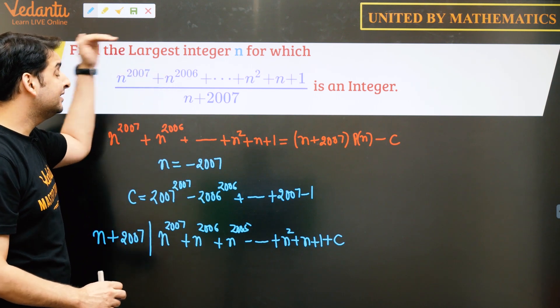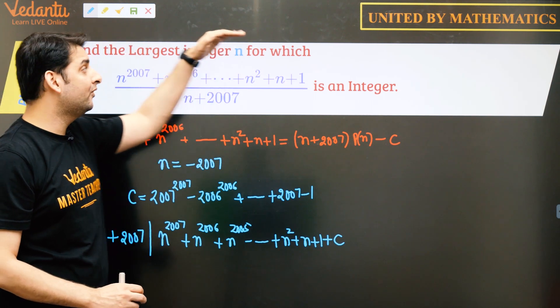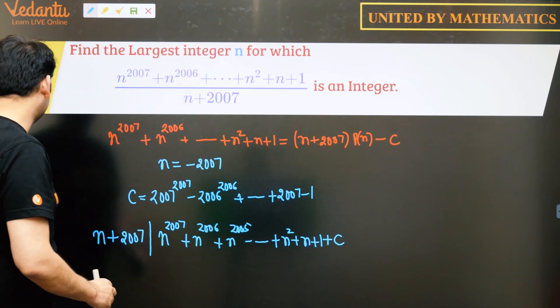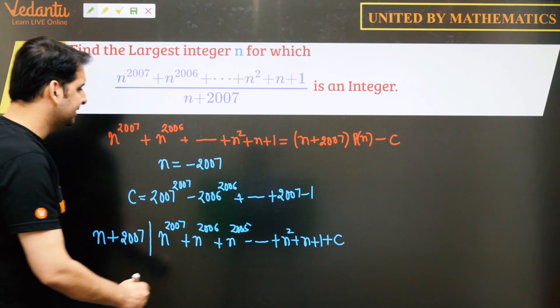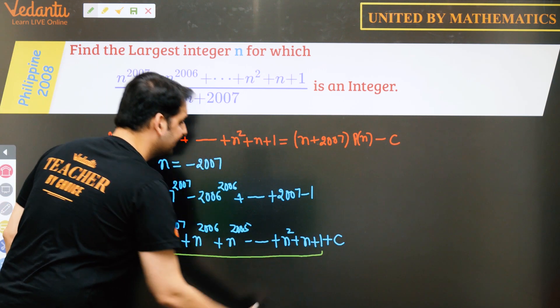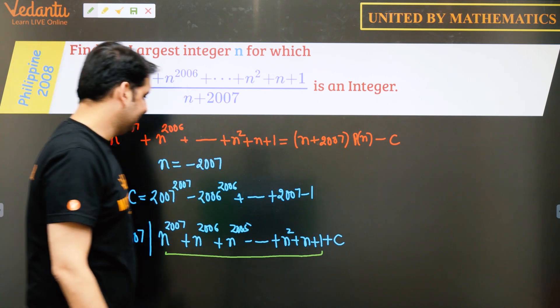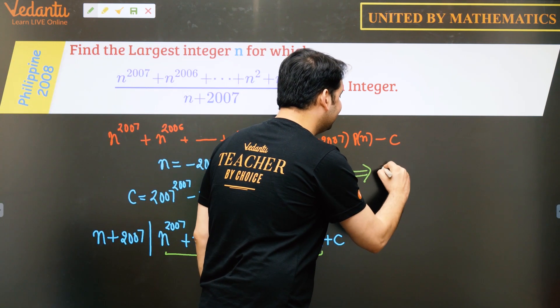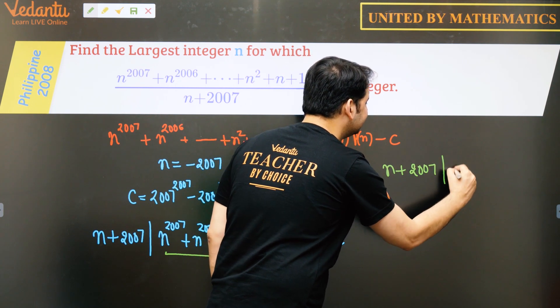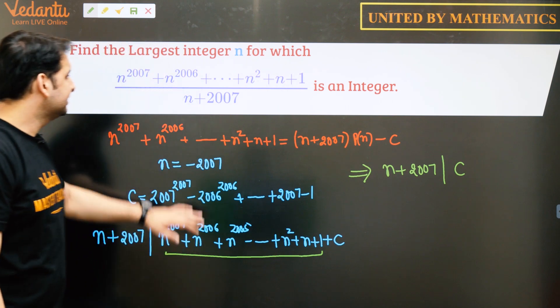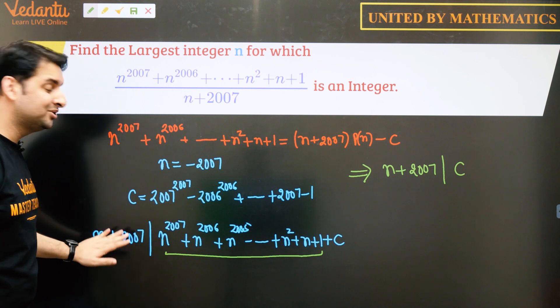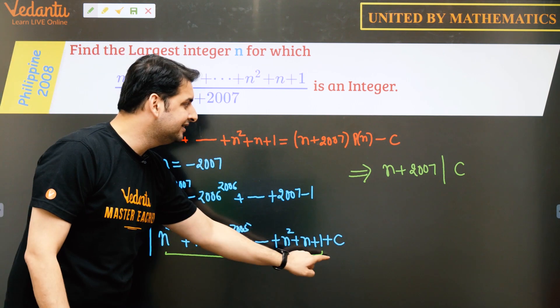Now the question is, find the largest integer n for which n plus 2007 divides the numerator. So if n plus 2007 divides this polynomial by this relation, I can also say that n plus 2007 divides c because if n plus 2007 divides this polynomial and we have this relation, so n plus 2007 also divides c.